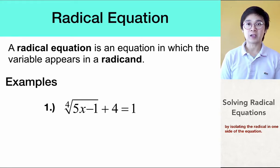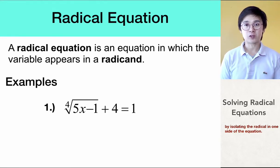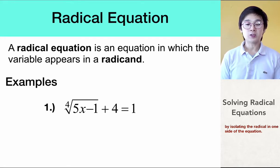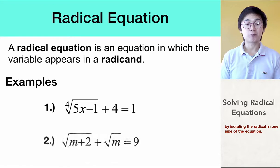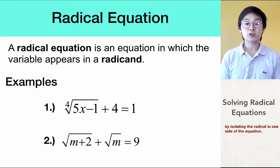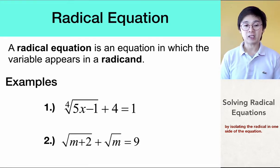So, if you're getting rid of the square root, you're going to take the square of both sides. And if you're getting rid of a fourth root, you're going to take the fourth power on both sides. So, problem number one is an example of a radical equation, and equation number two is also another form of radical equations.